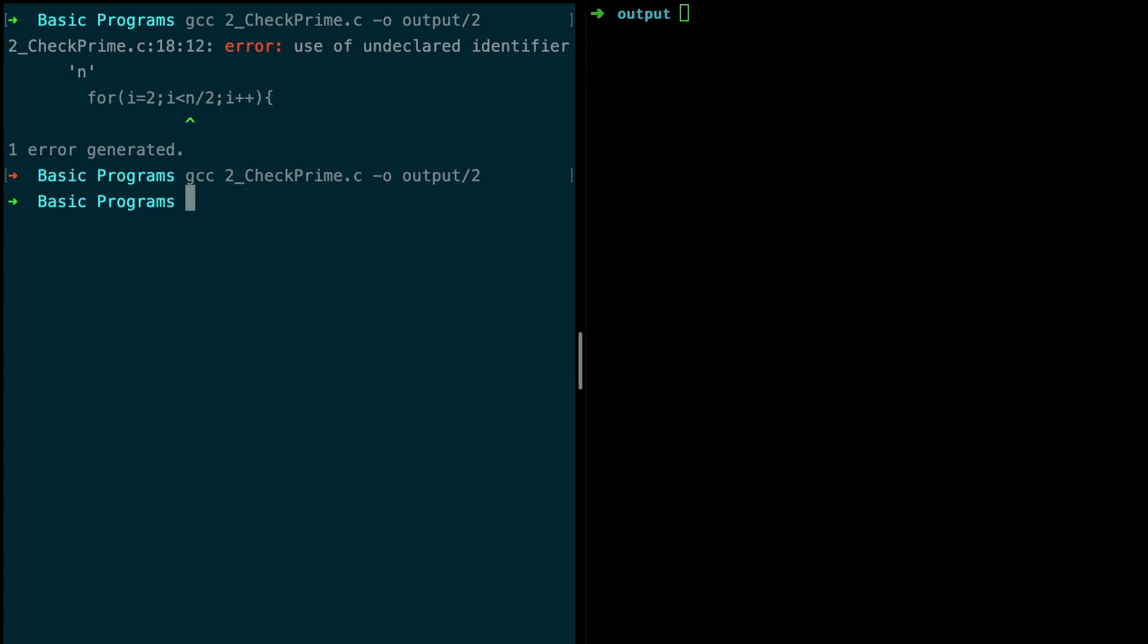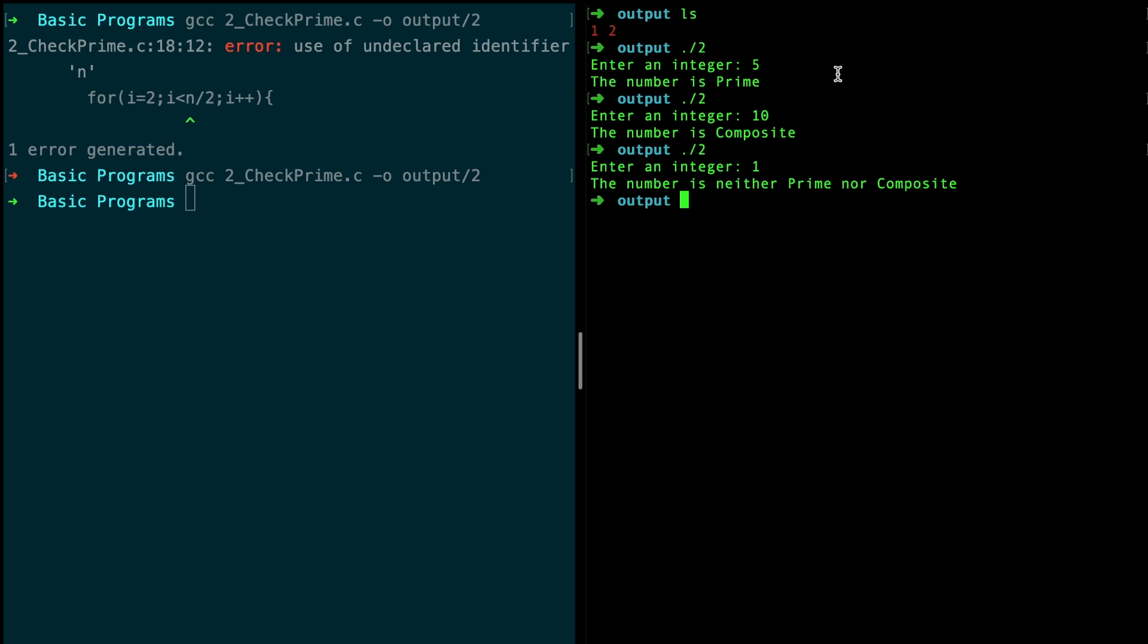All right, it works. Now let's see, listing it out. Yes, two is there. The output code is ./2. Enter an integer: 5. Five is a prime. Okay, let's try one more. 10 is a composite. Yes. One more time, let's type it as 1. It's neither prime nor composite. Absolutely, okay.